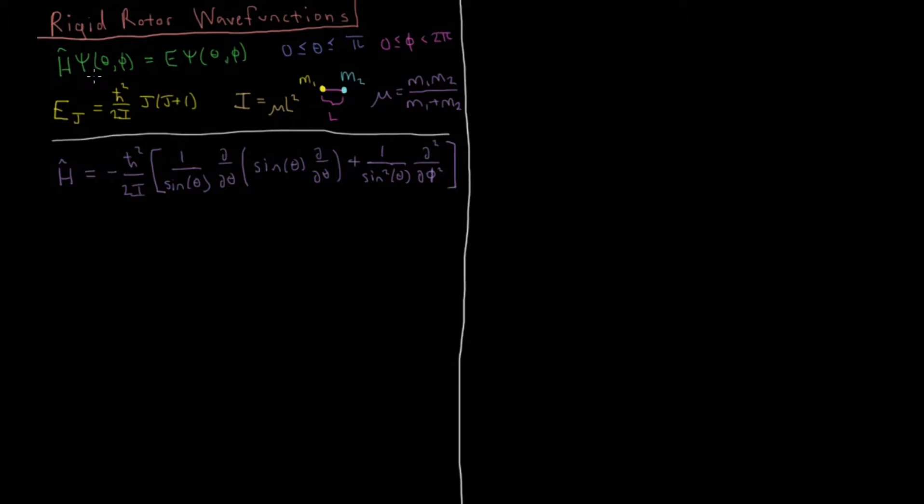In this case, it's a function of the spherical polar coordinates theta and phi, theta going from 0 to pi inclusively, and phi is going to be anywhere between 0 and less than 2 pi.